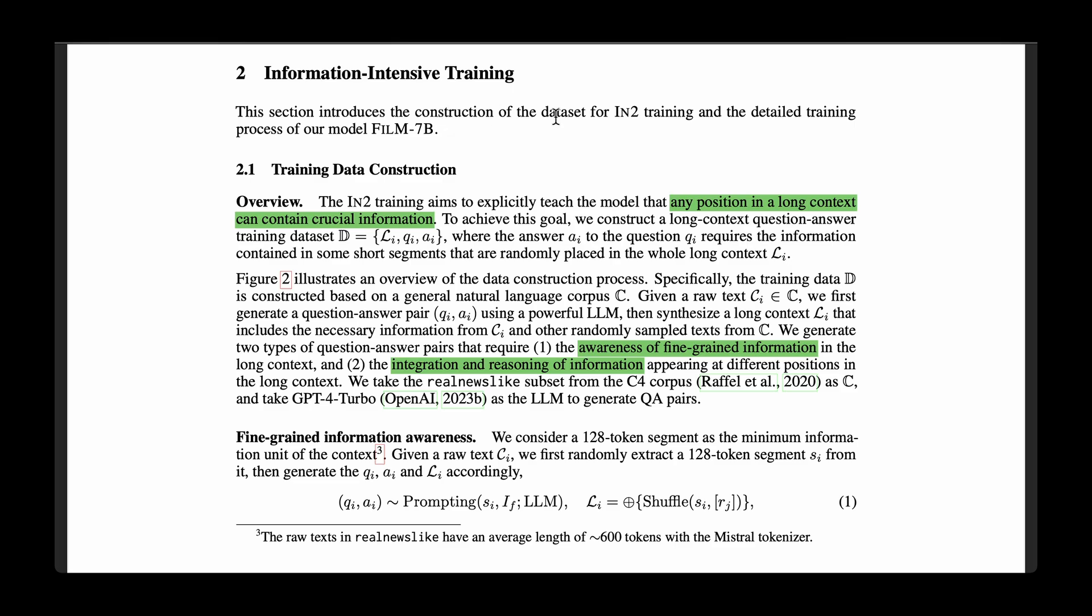So let's look at how information intensive training works. They introduced the construction of a dataset for IN2 training. So IN2 training aims to explicitly teach the model that any position in a long context can contain crucial information. The hypothesis is that if we have a long context, then there must be places within this context where the information is quite crucial. And the idea of information intensive training is to exactly enable the model to spot these locations where information is crucial. For this, they're constructing a long context question answering dataset.